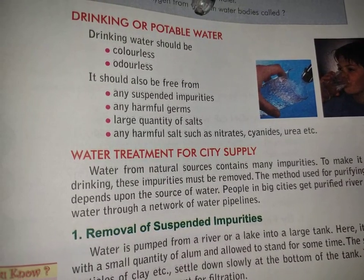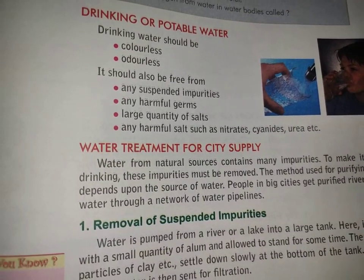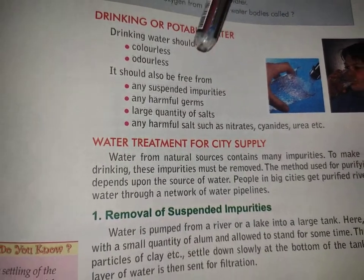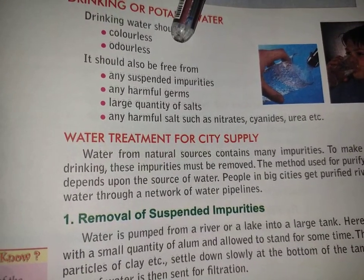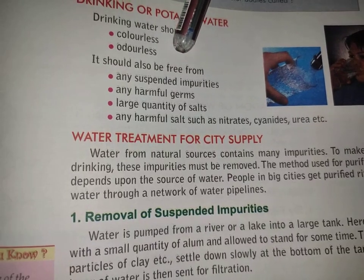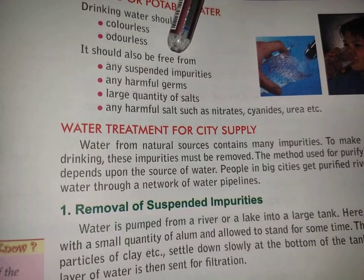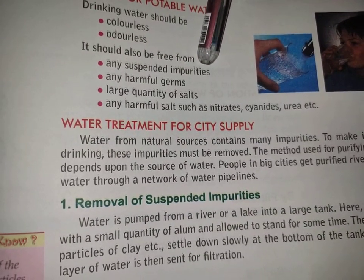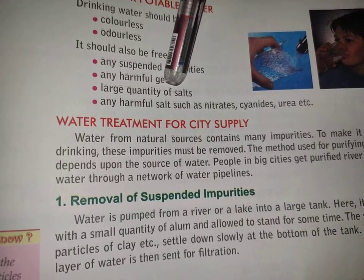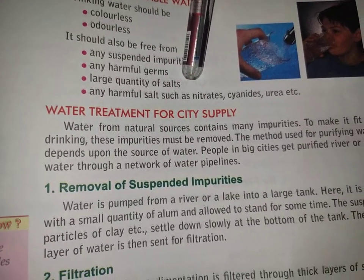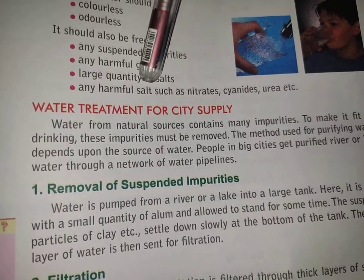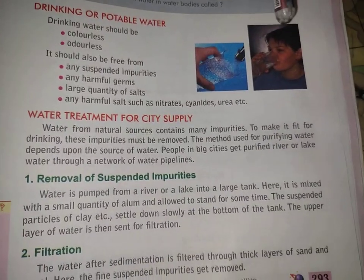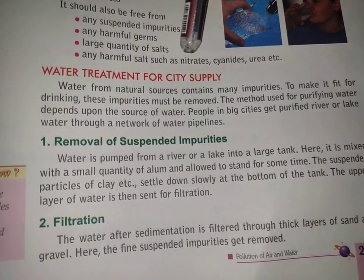Potable water is that water that you can drink. This water should be free from any suspended impurities — no impurities, no germs, no large quantity of salt. Salty water you cannot drink. It should also be free from any harmful salts like nitrate, cyanide, and urea — all of which may be present in water supplied to cities.